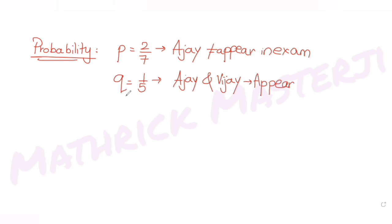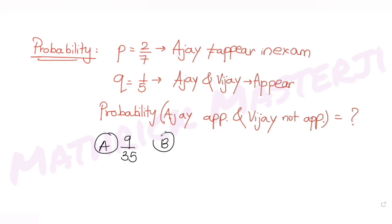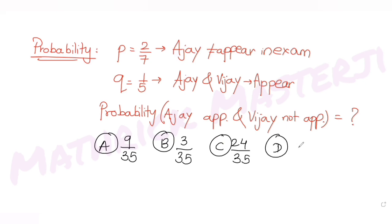The question asks us to find the probability of Ajay appearing in the exam and Vijay not appearing in the exam. The answer choices given are: 9/35, 3/35, 24/35, and 18/35.